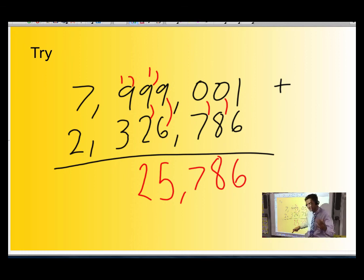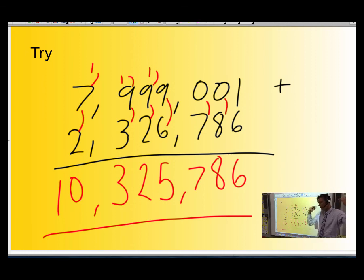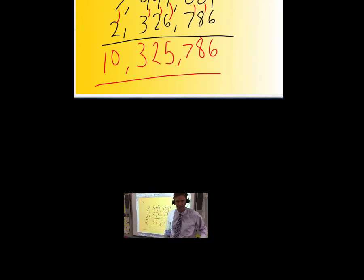1 plus 9 is 10, plus 3 is 13. Put down the 3, carry the 1. 1 plus 7 is 8, plus 2 is 10. So your answer should have been 10,325,786. That's Teach Together Try with Mr. Burns. See you later.